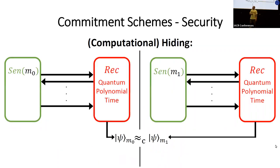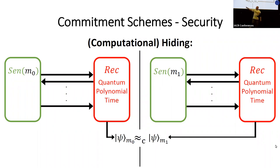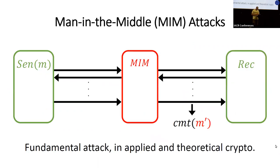Another security property is hiding. Quantum computational hiding says that the receiver doesn't learn anything from the interaction unless the message was revealed. Formally, we look at the quantum view of the receiver for any pair of messages — the view for m1 and the view for m0 — and these are computationally indistinguishable.